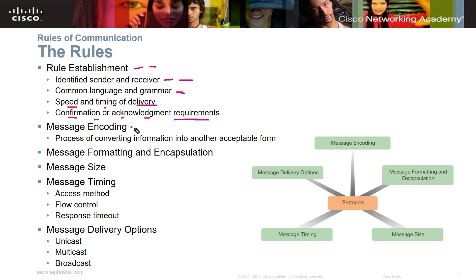We also look at message encoding — how we convert information into an acceptable form for transmission from a computer to wire or wireless medium. Other key elements include message formatting and encapsulation, message size, message timing, and message delivery options: unicast, multicast, or broadcast. We'll explore those delivery terms in future chapters.